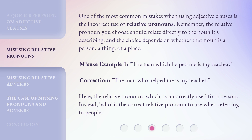Misuse Example 1: 'The man which helped me is my teacher.' Correction: 'The man who helped me is my teacher.' Here, the relative pronoun 'which' is incorrectly used for a person. Instead, 'who' is the correct relative pronoun to use when referring to people.